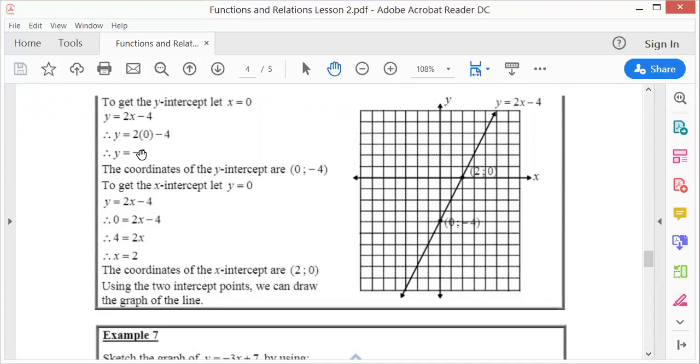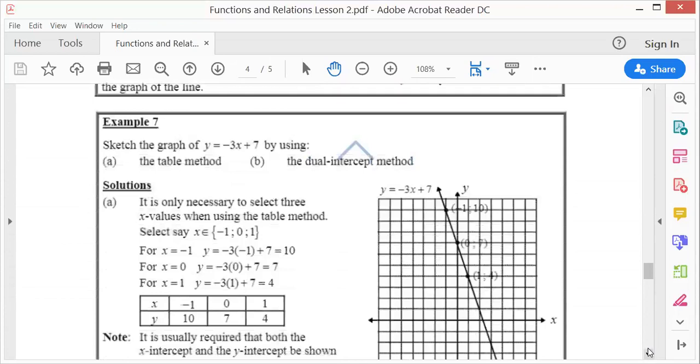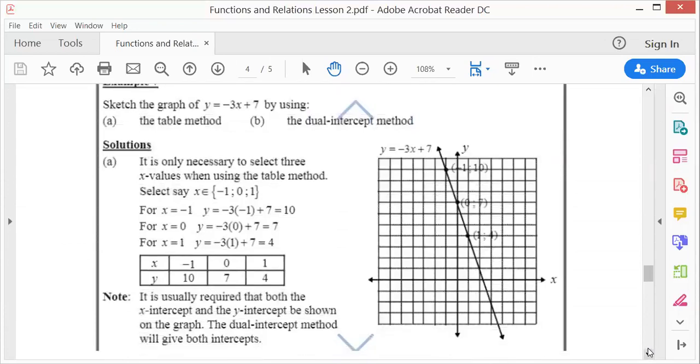And if you do it here, there you are. If x is 0, y is minus 4, so there you are. If y is 0, x is 2, and that's all you need to draw the graph. So the dual intercept method is actually easier.